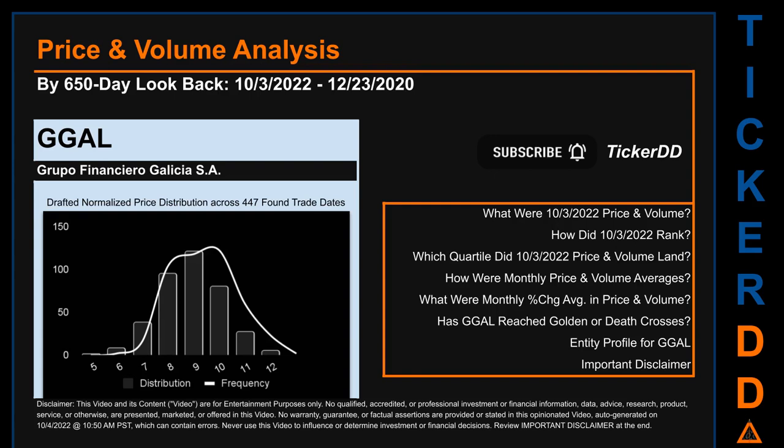Let's get started. GGAL went public on August 31, 2001, which was roughly 21 years ago. Looking back 650 calendar days from Monday, October 3rd, 2022, we found 447 applicable trade dates for use in our analysis. The chart shown on this page is our initial attempt at studying the price for GGAL after dynamically normalizing price distribution across those discovered trade dates. The bar chart is the generated distribution, and the overlaid line graph shows the frequency of prices on the x-axis. This is just a drafted, in-progress observational model. Let's dive into price and volume analysis.